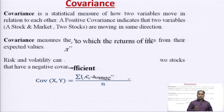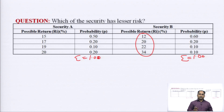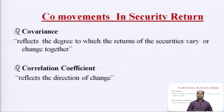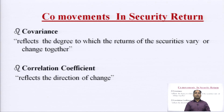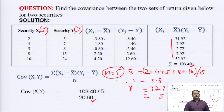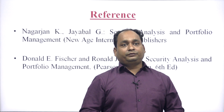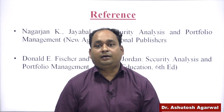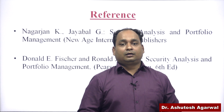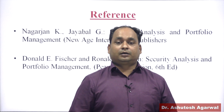These were the three methods discussed: first, standard deviation; second, covariance; and third, correlation coefficient. These are the measurements of risk under unsystematic risk profiling. In the next lecture, we will discuss systematic risk profiling. I have taken the help of Nagarjuna and Fisher & Jordan — the book of Security Analysis and Portfolio Management — for explaining the measurement of risk. Thank you very much.